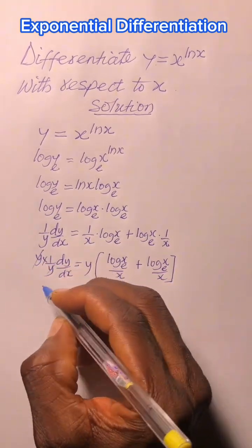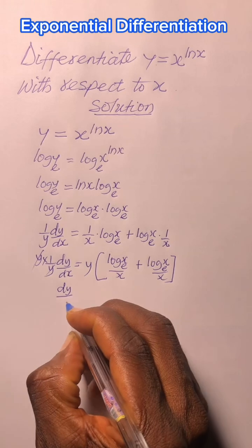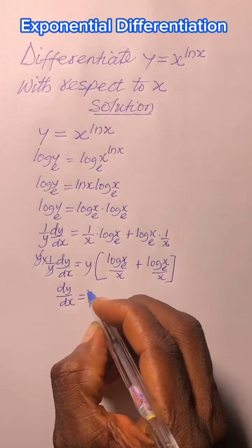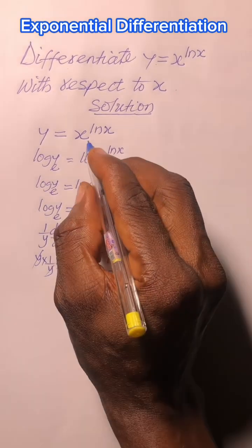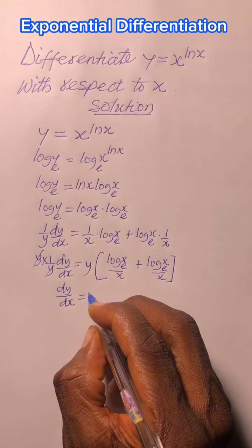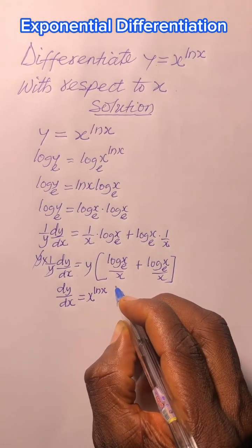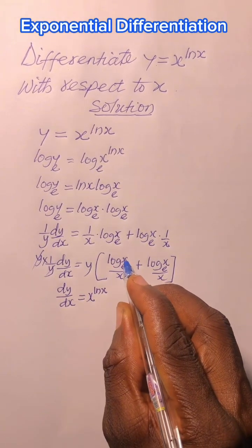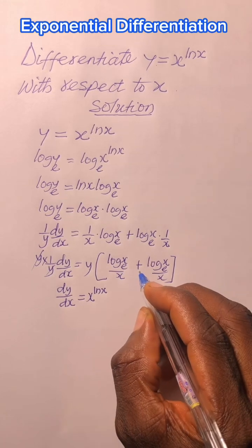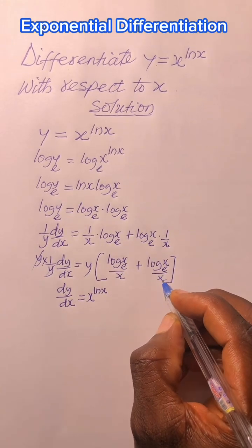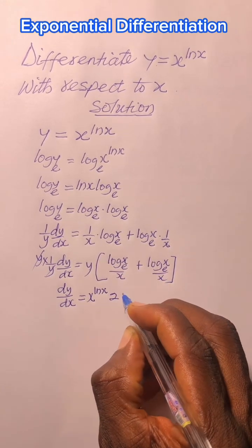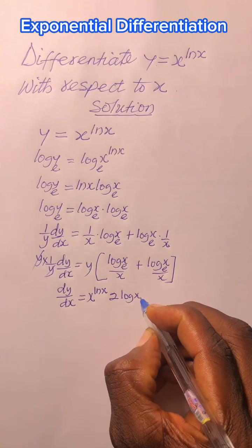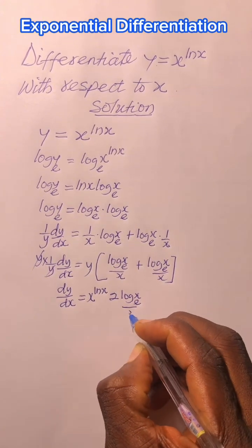Now, y will cancel y, we have dy/dx equal to. The value of y has been given as x^(ln x), which is x^(ln x). Now, log_e(x)/x plus log_e(x)/x is 2·log_e(x)/x.